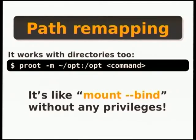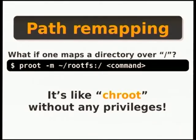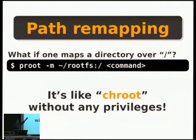What would happen if you try to map a directory over your actual root filesystem? It will be semantically the same as chroot — your command will not run from your actual root filesystem, but from the specified one. For instance, if you try to run VLC, it will start VLC from the specified root filesystem, assuming there is a full distro in that directory. Once again, this is just like chroot, but without any privileges.